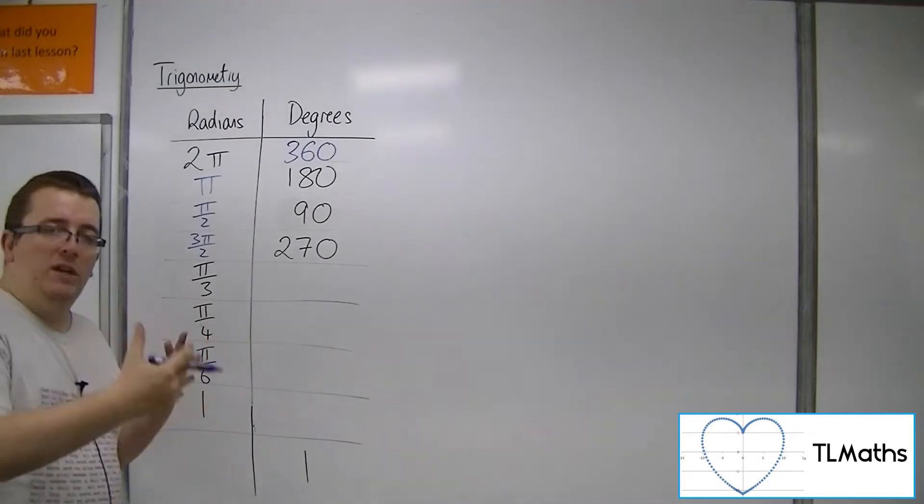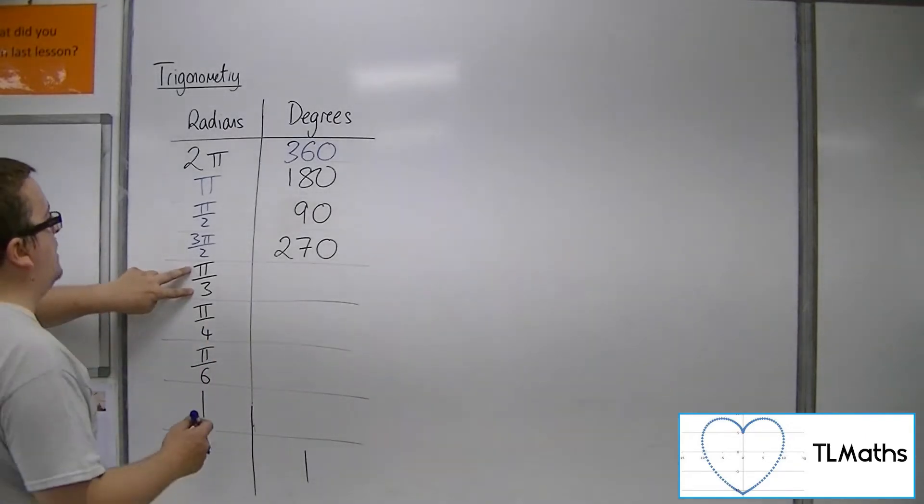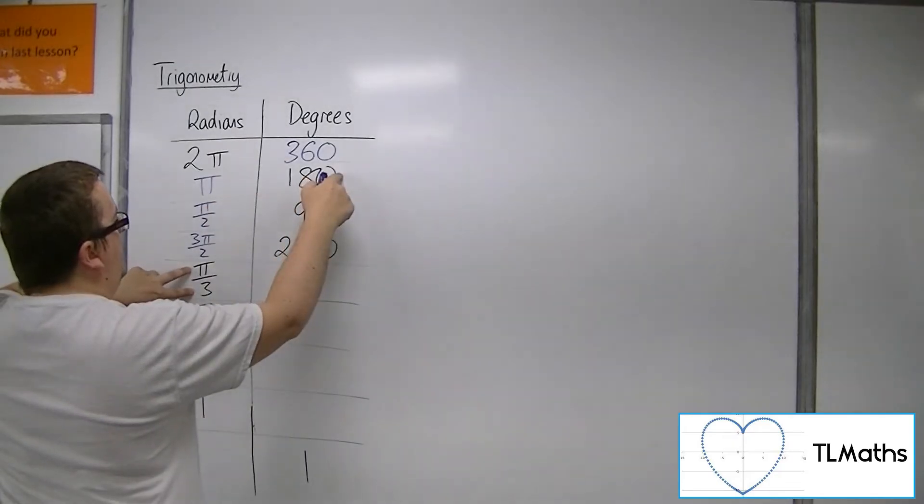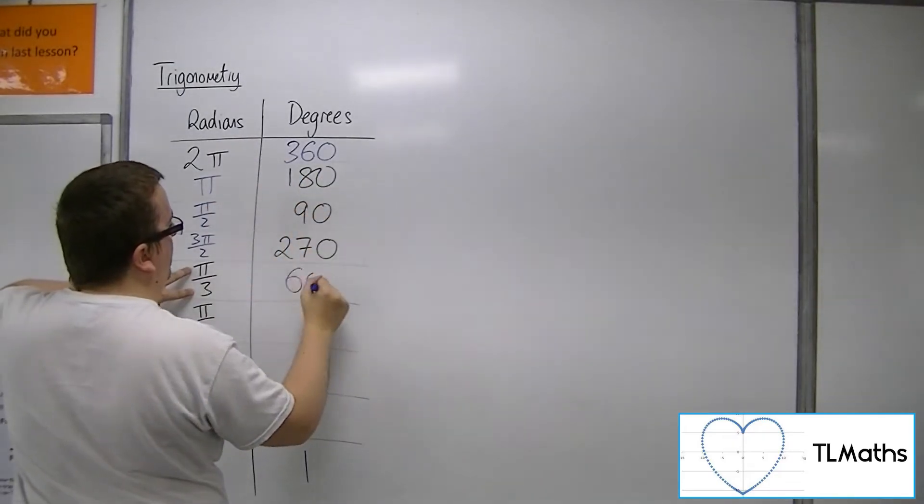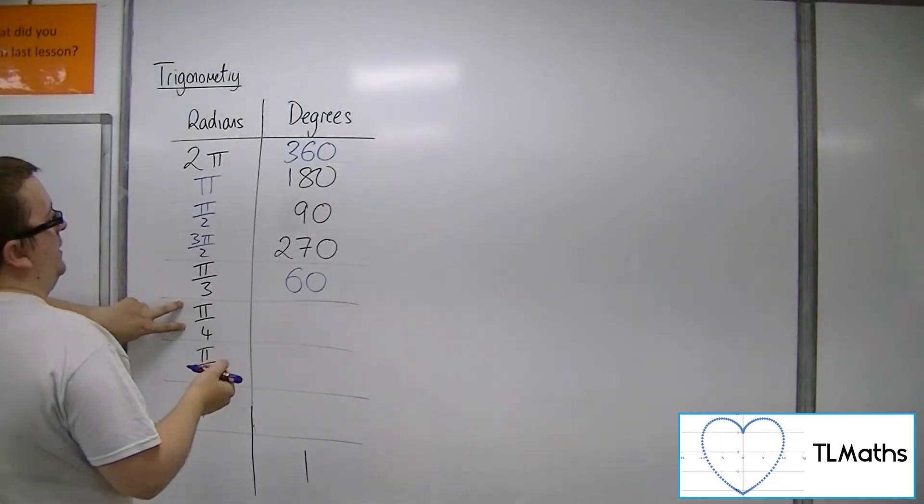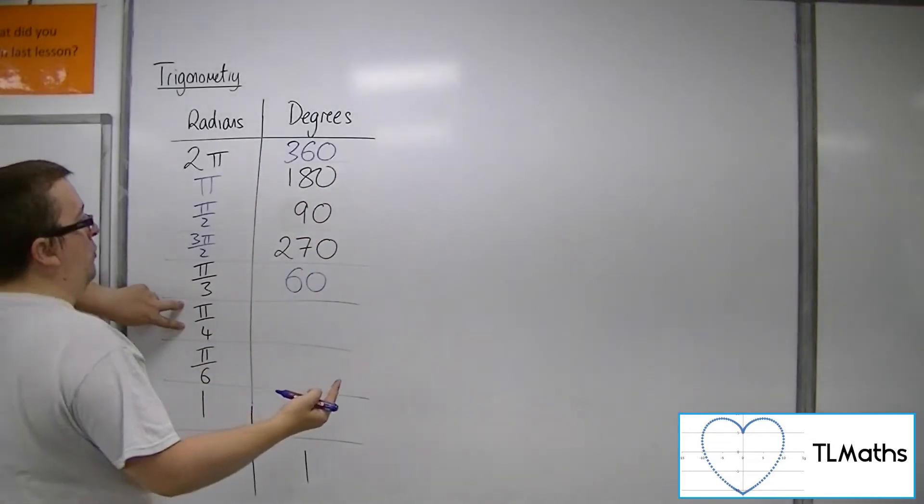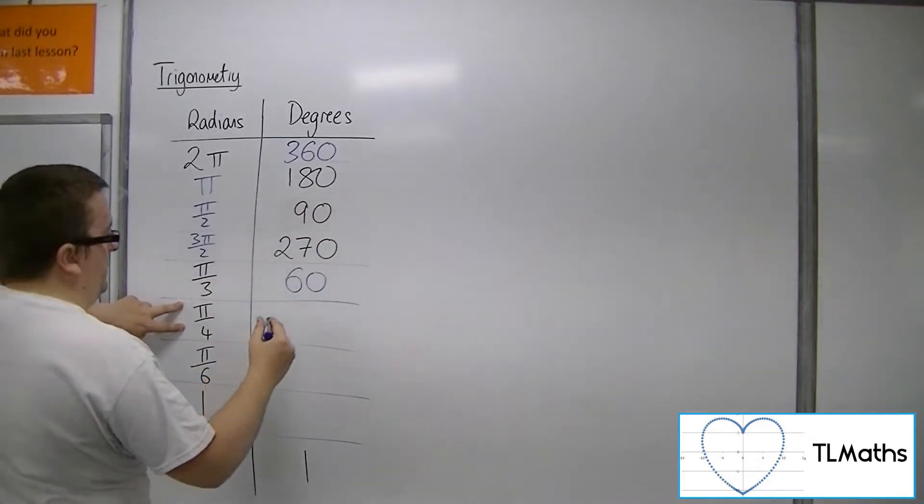Pi over 3, well if pi is 180, then pi over 3 must be 60, dividing both sides by 3. Pi over 4, using the same kind of idea, pi is 180, so 180 divided by 4 is 45 degrees.